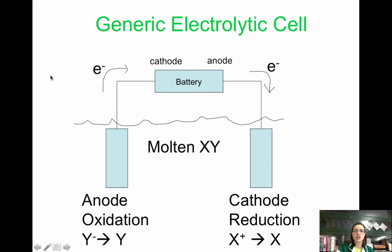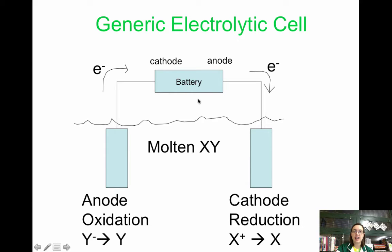In a general electrolytic cell, you have the anode, which is still where oxidation occurs, and you have the cathode, which is still where reduction occurs. But notice you have a battery — instead of just a voltmeter or a lightbulb, this actually has to be a battery.